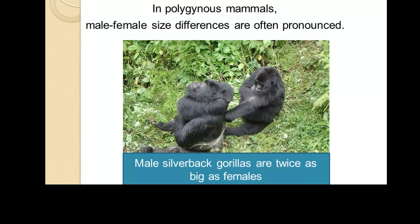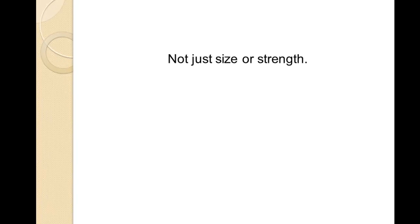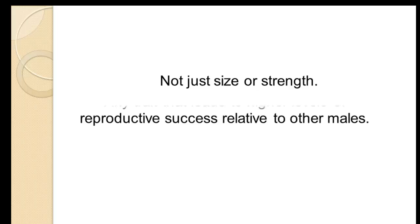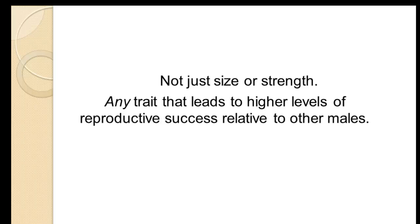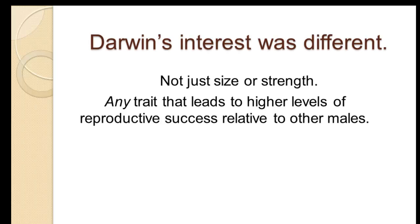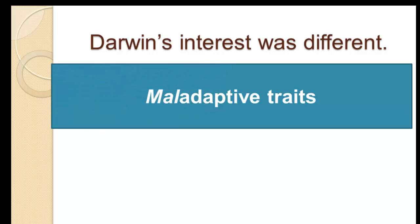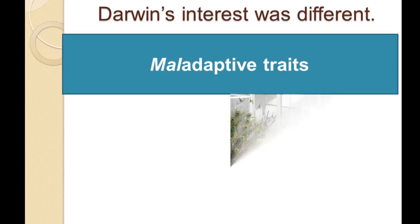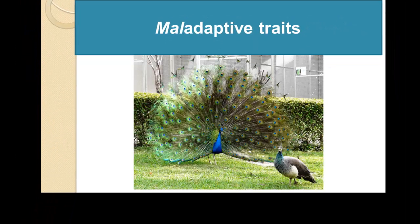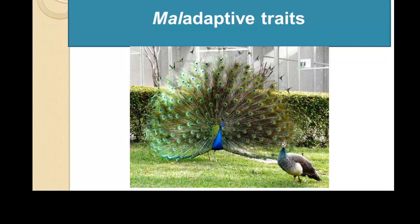In humans, sexual dimorphism has actually decreased steadily over the last two million years. It's not just size or strength that gets sexually selected — any trait that leads to higher levels of reproductive success can be sexually selected for. Darwin's interest was in maladaptive traits, and the most famous example is the male peacock's massive tail, which could not have been the product of natural selection since it doesn't confer greater survival from predators. Instead, it must have been the product of sexual selection.